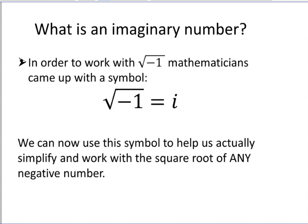So what is an imaginary number? In order to work with the square root of a negative, math just came up with a symbol, i, for imaginary. So i equals the square root of negative 1. We can now use this symbol to help us actually simplify and work out the square root of any negative number.